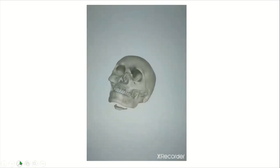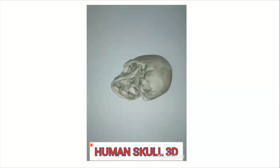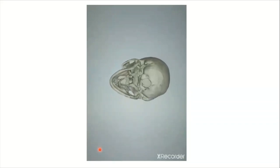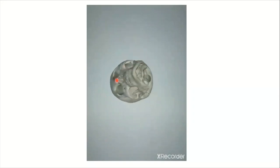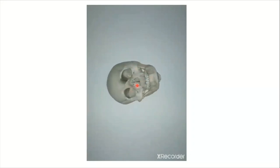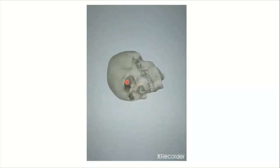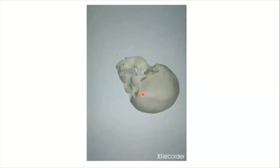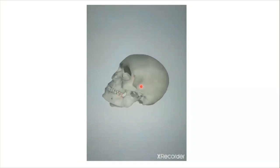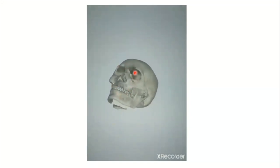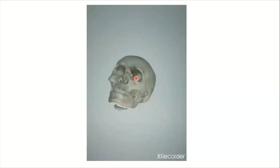The skull is rotating in various dimensions — this is the 3D rotation. You can see the inferior aspect, the front, the lateral, and the superior aspect of the skull as it rotates through the different views.